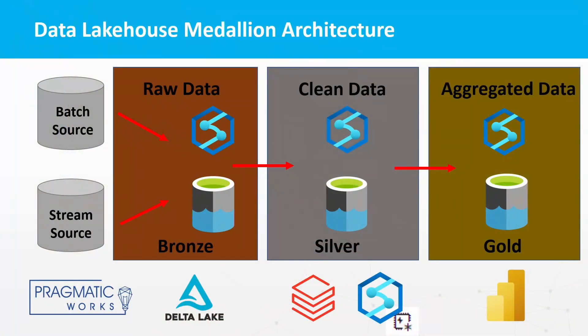One of the ways we're going to better understand exactly what the data lakehouse looks like is by utilizing the data lakehouse medallion architecture. One way of organizing your delta tables inside of this architecture is to use the bronze-silver-gold medallion structure. This medallion architecture describes a series of data layers that denote the quality of data stored in the lakehouse. The bronze layer is the raw unprocessed data layer where data is ingested from various sources and stored in its native format. This layer is typically used for data discovery and exploration and is optimized for low-cost storage and high scalability.